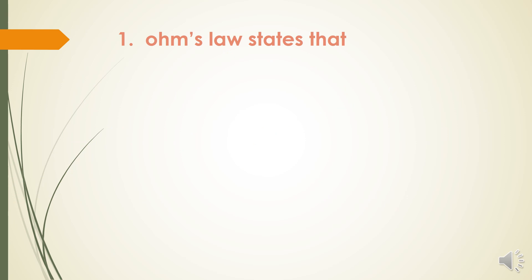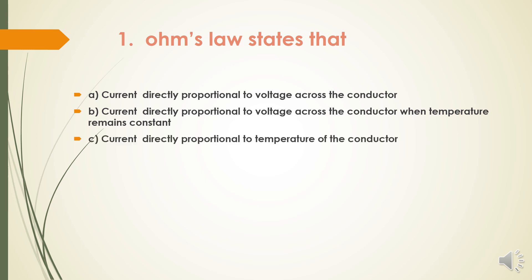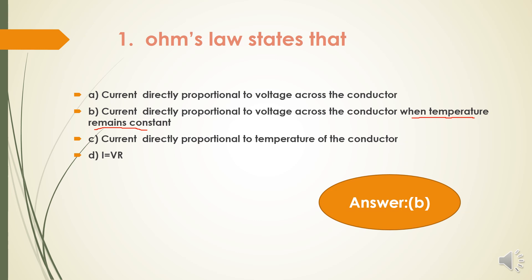First question: Ohm's law states that — option A: current directly proportional to voltage across the conductor; option B: current directly proportional to voltage across the conductor when temperature remains constant; option C: current directly proportional to temperature of the conductor; option D: I = V × R. According to Ohm's law, the correct answer is option B — current is directly proportional to voltage across the conductor when the temperature remains constant.